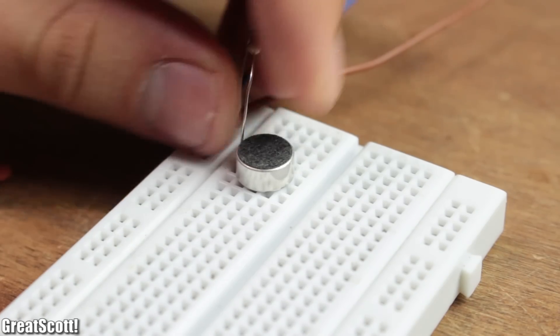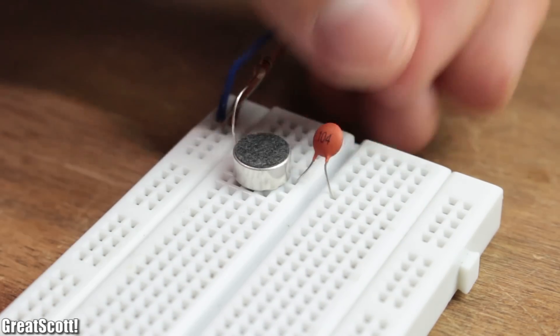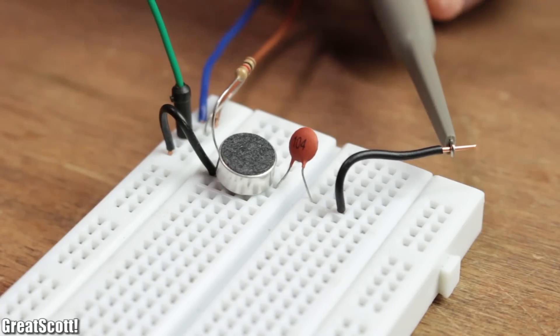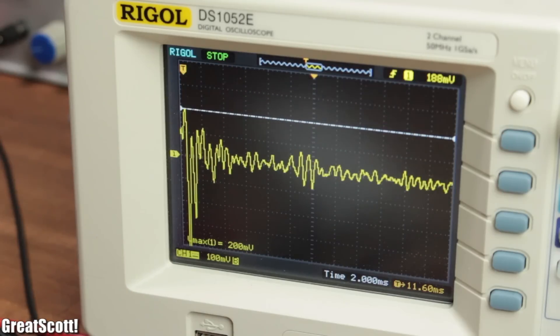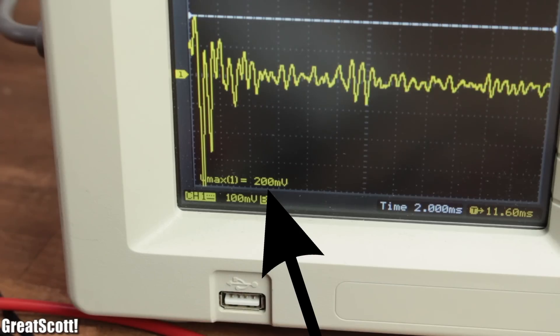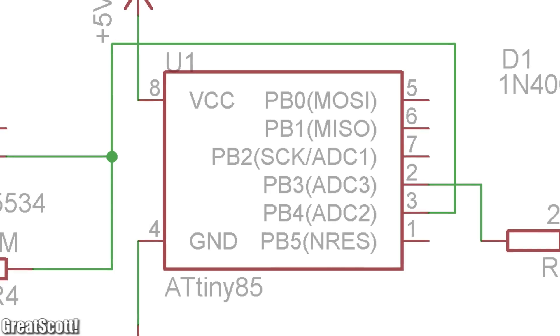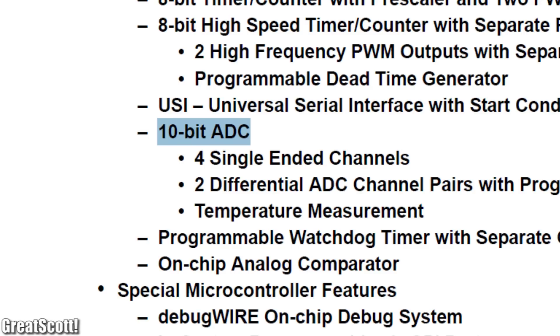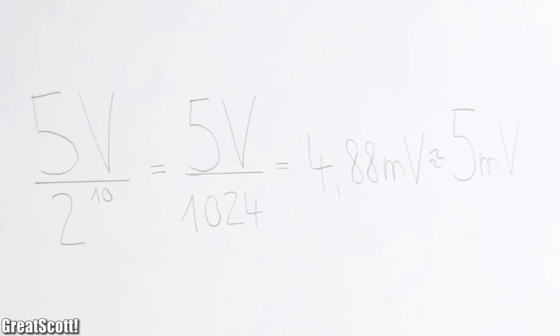If we power it through a 1 kilo ohm resistor and use a 100 nanofarad capacitor on the output, we can see that there appear small voltage bursts whenever I clap. But the peak voltage is only around 200 millivolts. Now the ATtiny85 that I want to use has a 10-bit analog to digital converter, which can recognize steps of around 5 millivolts, so it should work.